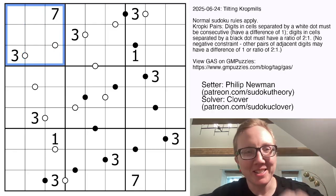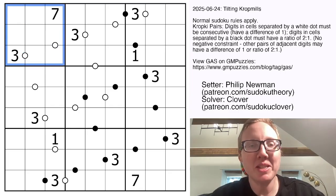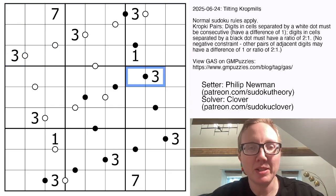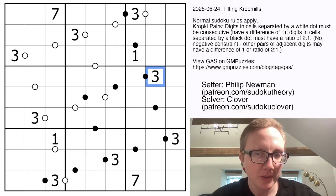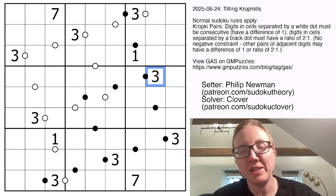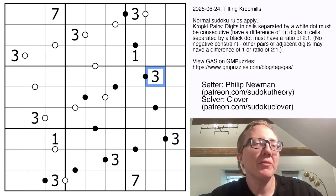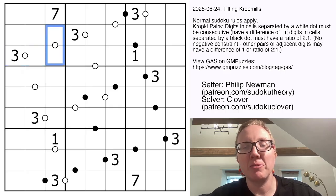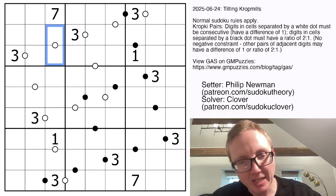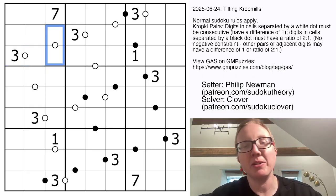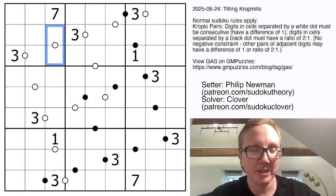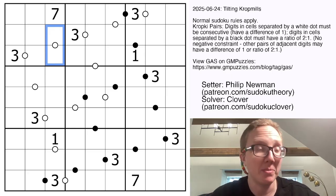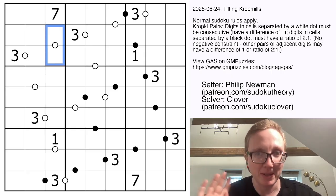We also have some black and white dots in the grid. Wherever you see a black dot, the digits on either side are in a 1 to 2 ratio. Wherever you see a white dot, the digits on either side are consecutive. Not all dots have necessarily been given, so you only know about the pairs that have been marked.